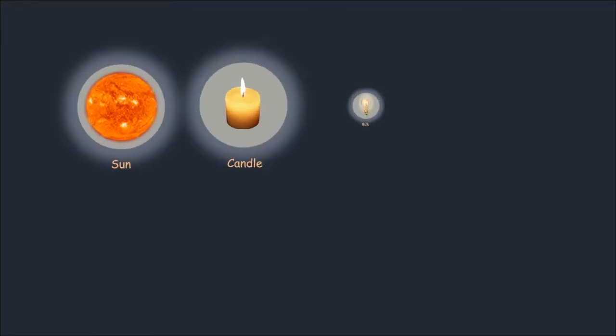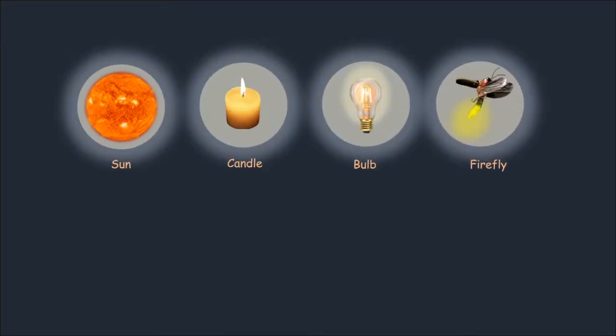In the last video, we discussed luminous and non-luminous objects. As you know, objects like the sun, candle, bulb, and firefly can emit light by themselves. So these are known as luminous objects.